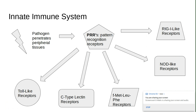We also have the Fmet-leu receptors, which respond to bacteria specifically. Fmet itself is used for the initiation of protein synthesis within bacterial species, so these receptors are able to recognize and bind to it. Then we have NOD-like receptors, whose main role is to detect cytoplasmic PAMPs, which often induce an immune-inflammatory response complex known as the inflammasome.